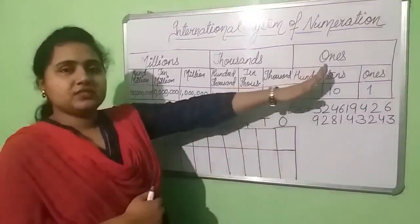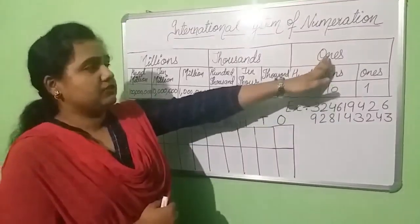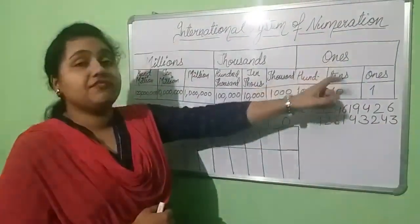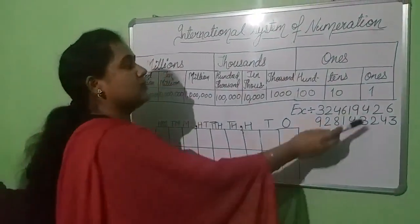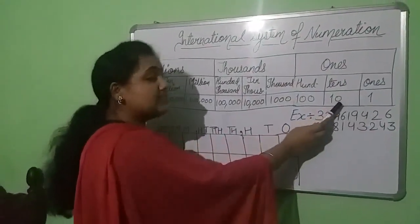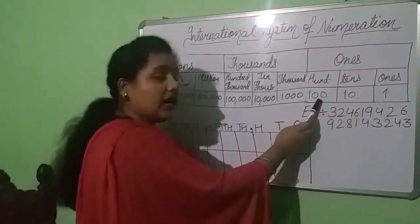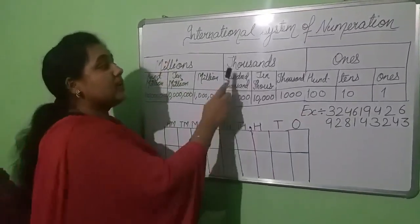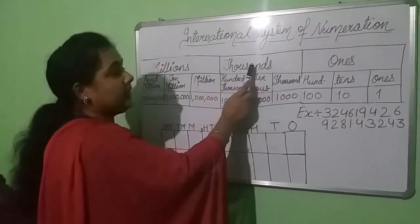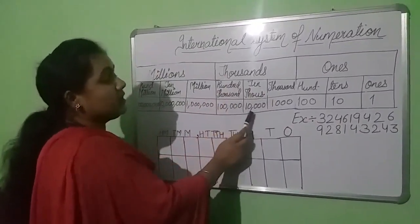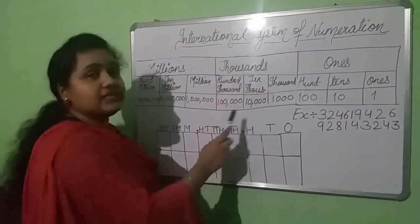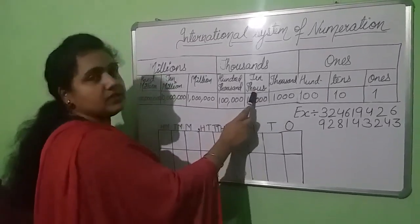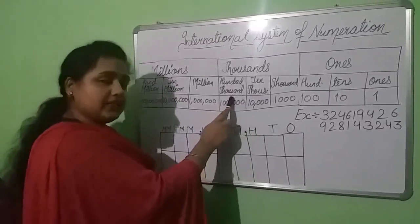The very first period in the international place value chart is ones. In ones, we have three place values: ones, tens, and hundreds. The second period is the thousands period, and in this period also we have three place values: thousand, ten thousand, and hundred thousand.